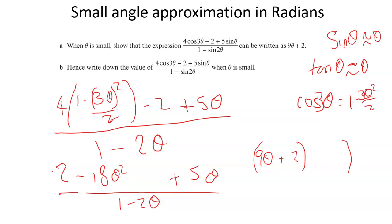So if I times that by minus 1, the minus 1 becomes plus 1, and the plus 2 theta becomes minus 2 theta. And that's over 1 minus 2 theta, and oh look, cancel, cancel, and we're left with 9 theta plus 2, which is what we wanted.